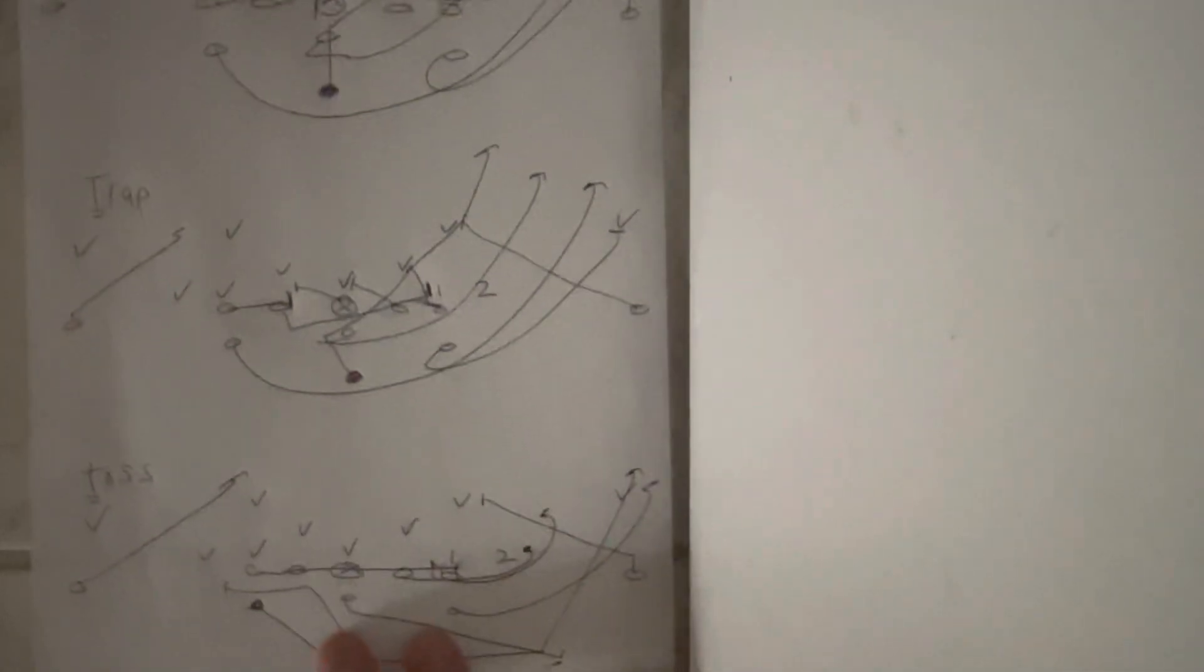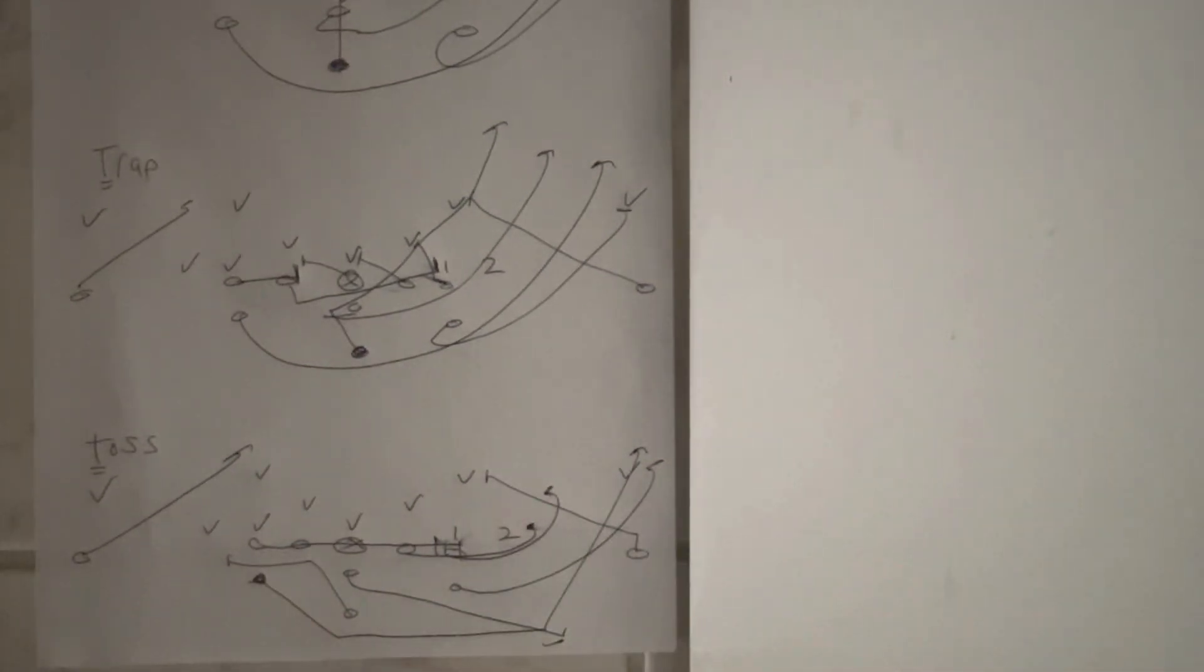If that doesn't work, tossing the ball is your final option, because tossing the ball, what happens here is you'll switch blocking out the perimeter. The tackle's got to run past number two to get to the backer. The guard is working to get to number two.